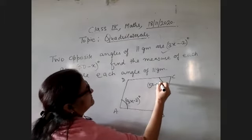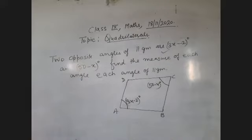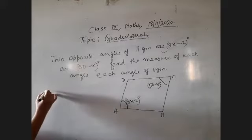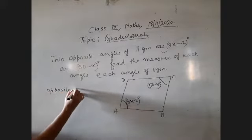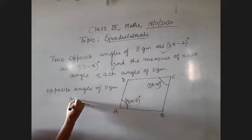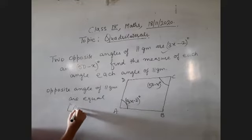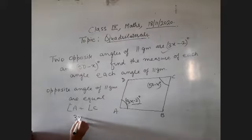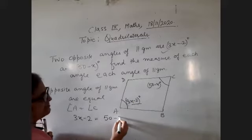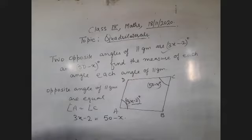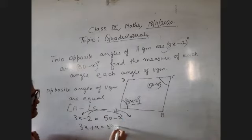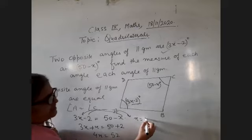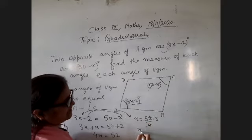We have 50 − x degrees. You have two opposite angles given. So the property of parallelogram — opposite angles are equal. This is the property, right? So write the property: opposite angles of a parallelogram are equal. So angle A equals angle C. Angle A is how many degrees? 3x − 2. And C is how many? 50 − x. So now how do we solve this? Transpose x to the left-hand side — plus x. Take −2 to the right-hand side — plus 2. So 4x equals 52. What is the value of x? 52 upon 4 = 13.